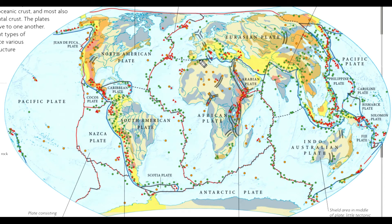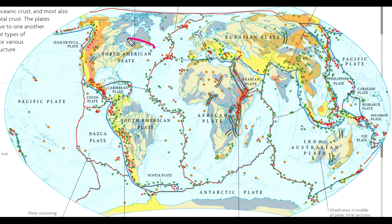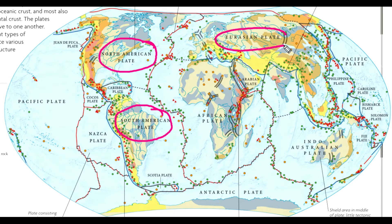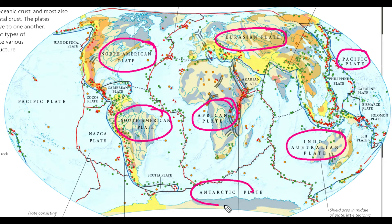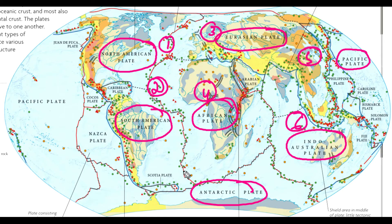We'll talk about the major and minor plates in the world. There are around seven major plates and other minor plates on Earth. The seven major plates are: the North American plate, South American plate, Eurasian plate, African plate, Indo-Australian plate, Pacific plate, and Antarctic plate.